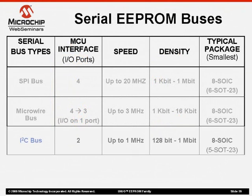Now let's look at the I2C bus, which uses two IO ports for communication. This bus operates at much slower speeds than the SPI or Microwire bus, but it uses the fewest connections, so it is the most commonly used bus for serial EEPROMs. The most popular package for this bus is also the 8-lead SOIC, but the 5-lead SOT-23 is also available from Microchip for lower densities up to 16 kbits.